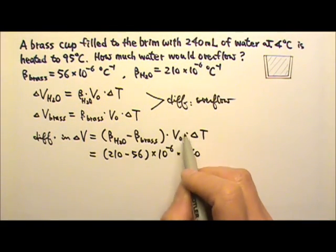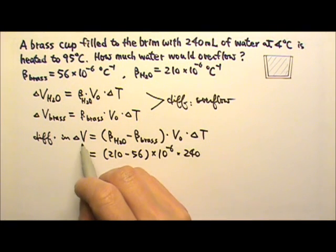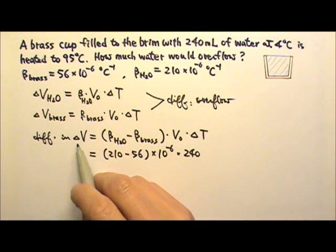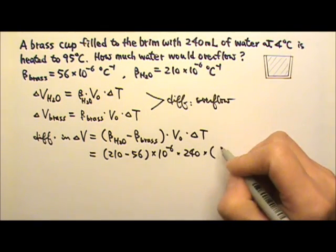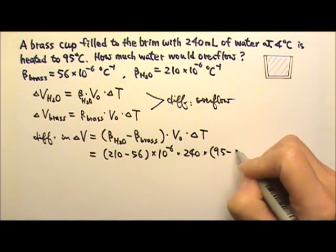I'm not going to change it to cubic meters, because if I use milliliters for the V₀, I'm just going to find the delta V, the difference in delta V in milliliters as well. The change in temperature is 95 minus 4.